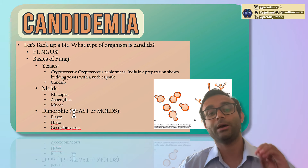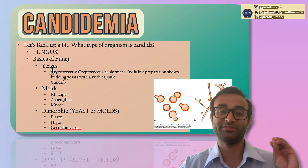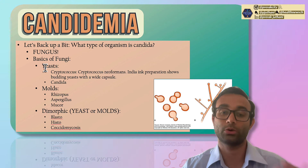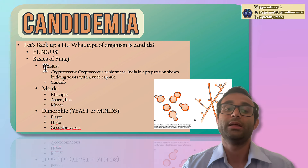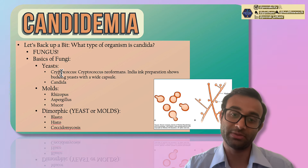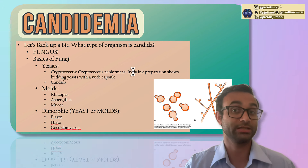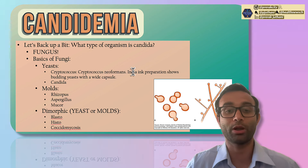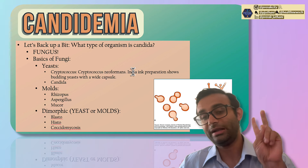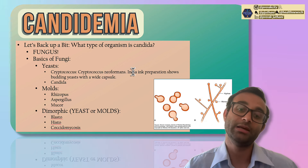When talking about Candida, that genus is a specific type of yeast, which means it's a unicellular organism. There's also Cryptococcus — Cryptococcus neoformans shows budding yeast with India ink preparation, which is a high-yield Step 1 tip. Candida and Cryptococcus are two of the most common yeasts.